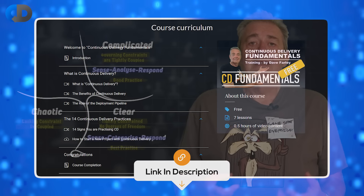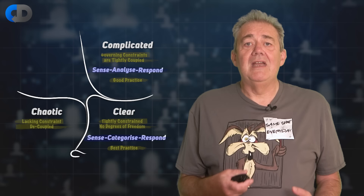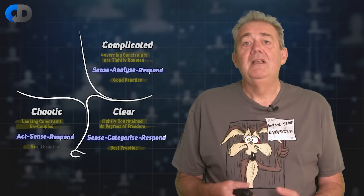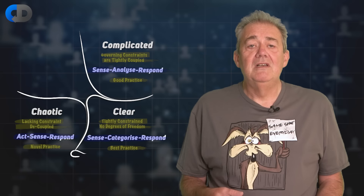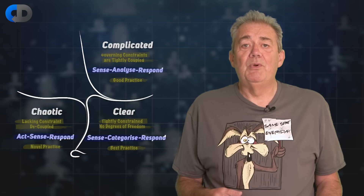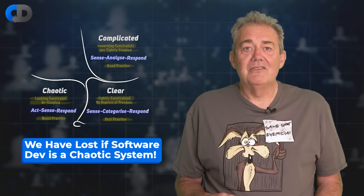Chaos is as problematic as it sounds. There's no predictable cause and effect. The best response in these circumstances is to avoid trying to predict what will happen next, and instead do something — anything — and then observe what happens, and only then decide how to respond. If you've ever found yourself trying to fix a bug with no idea what's going on, most of us in these circumstances find ourselves randomly changing things in desperation to see what happens. This is the correct response to chaos, but is usually a fairly poor response to fixing bugs.